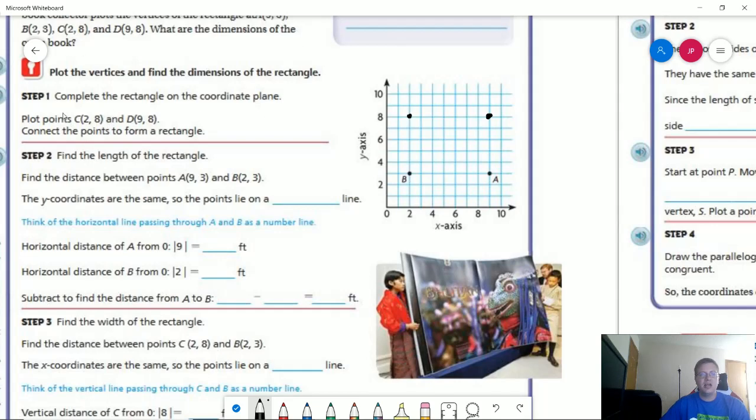So to start with, they gave us four points. They wanted us to plot points C and D. So point C would be positive 2, positive 8. Point D would be positive 9, positive 8. So this would be C. This would be D.